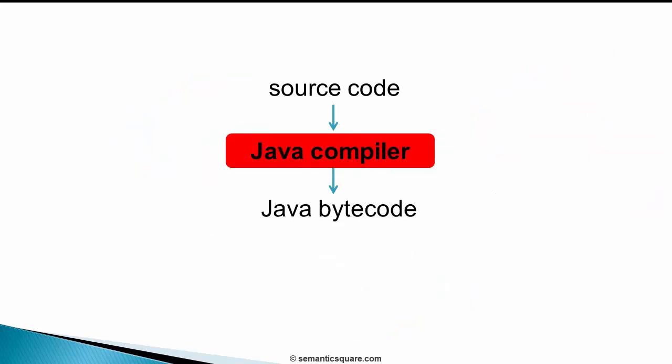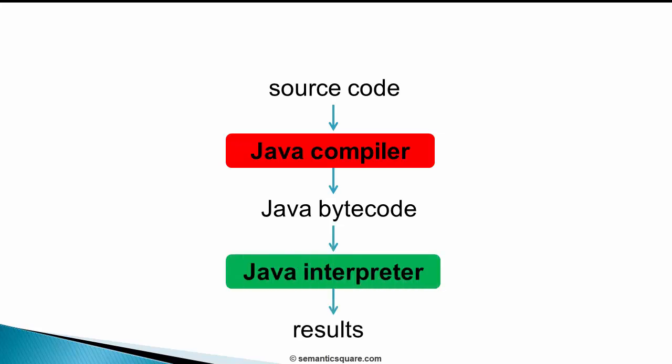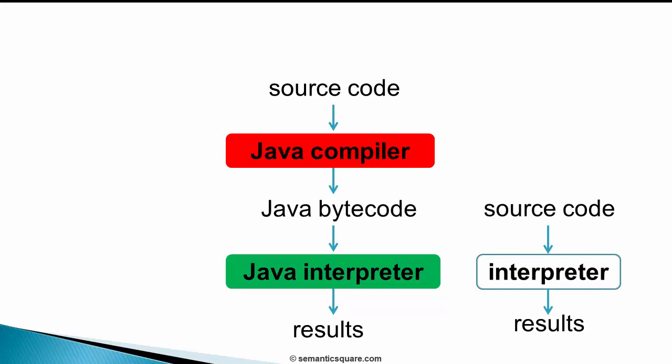Java source code is first compiled by the Java compiler into something called Java bytecode. It is not the machine code that typical compilers generate, but an intermediate format called Java bytecode. The compiled Java bytecode can then be interpreted on any platform that has a Java interpreter installed. The interpreter here is interpreting Java bytecode rather than source code directly.